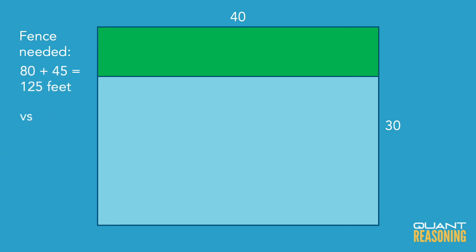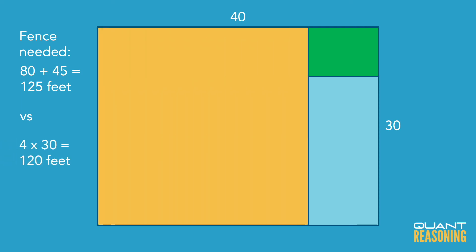Our number for the first version was 120, and now we have 125. The question is asking for the difference, and so that difference is five.